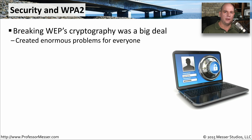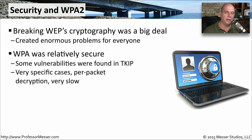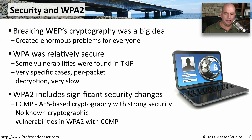Breaking WEP was a big deal. That cryptographic vulnerability was very easy to exploit, requiring drastic changes to wireless security. WPA was the next version of encryption created after WEP — extremely strong encryption — but vulnerabilities were found with its sub-protocol TKIP. The TKIP vulnerability was per-packet, very slow, and difficult to exploit, but we still needed a more secure protocol. So WPA2 was created, using CCMP and AES for strong cryptographic security of wireless data. Even today, there are no known cryptographic vulnerabilities when using WPA2 with CCMP.